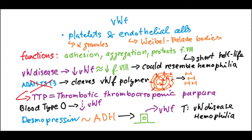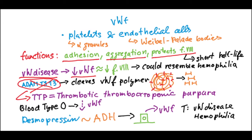To recap: von Willebrand's factor has important functions in platelet adhesion and aggregation, and it also protects factor eight. Decreased levels of von Willebrand's factor cause von Willebrand's disease. In contrast, decreased levels of the enzyme ADAMTS13 — which normally cleaves the huge polymer of von Willebrand's factor — leads to a serious disease called TTP. In some cases with decreased von Willebrand's factor, you can use desmopressin to force endothelial cells to release it.